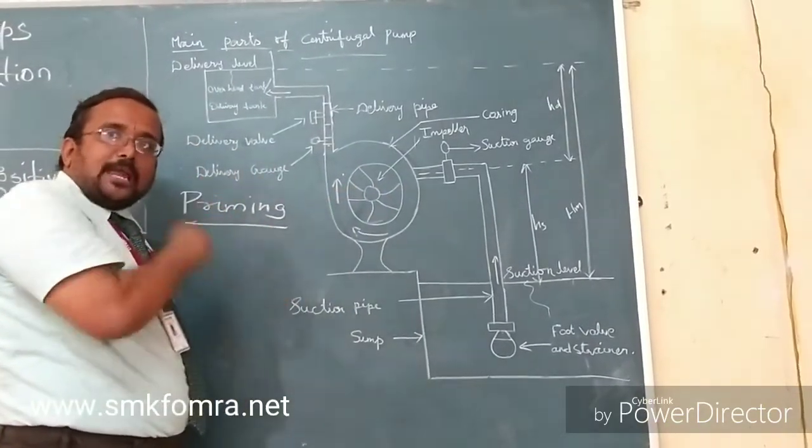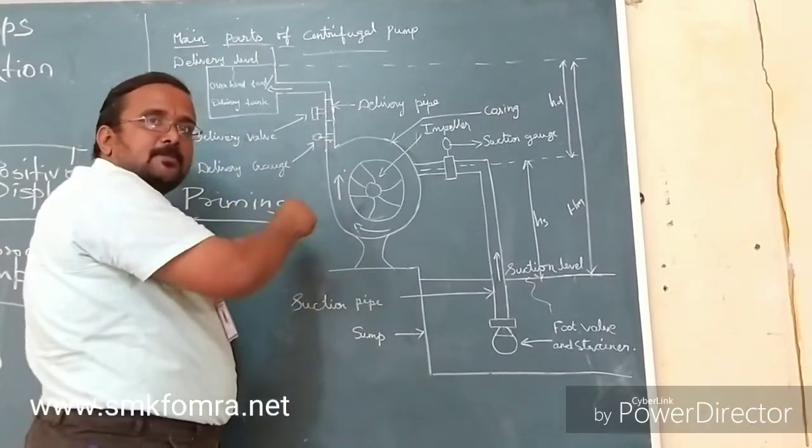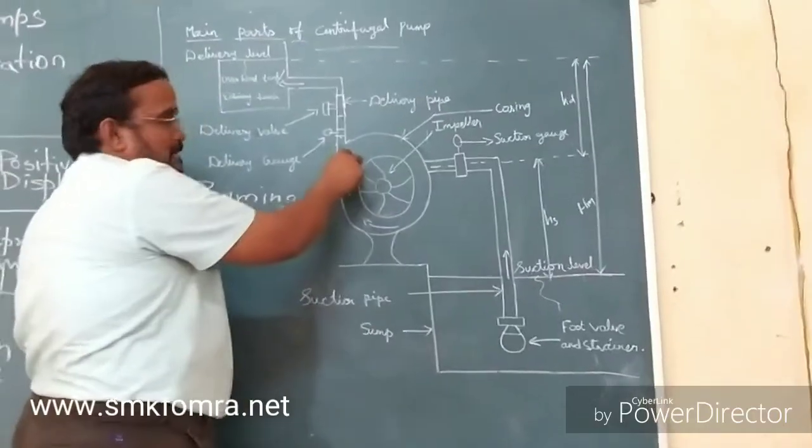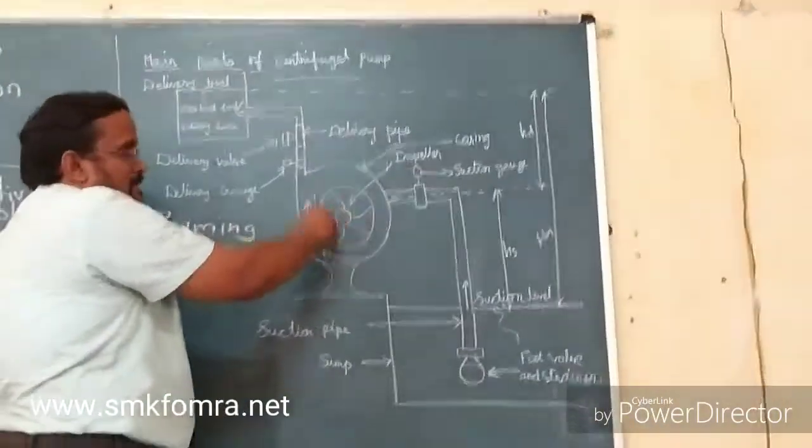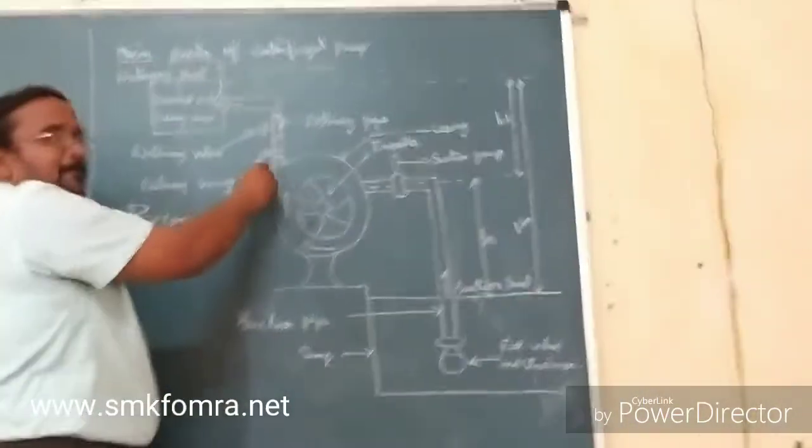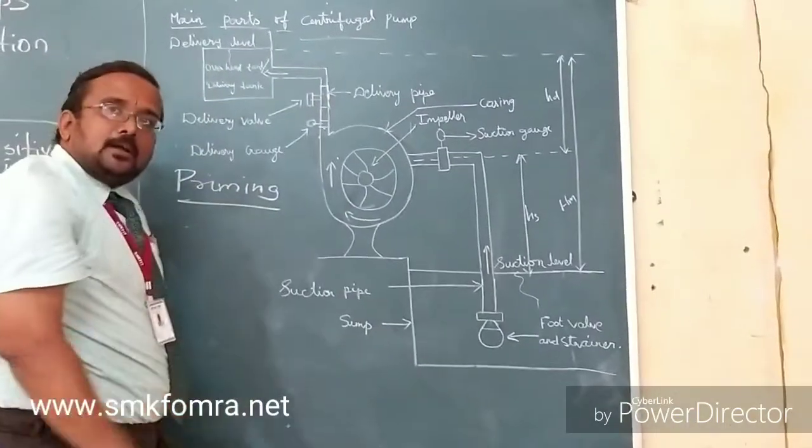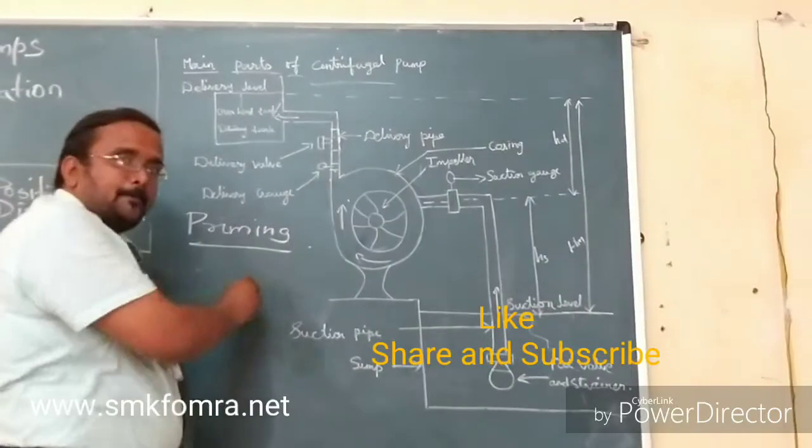When the impeller rotates, it imparts centrifugal force to the fluid. The fluid is displaced and it acquires velocity. Since centrifugal force is applied, it imparts velocity to the fluid, and it goes to the delivery pipe and is delivered into the tank. This is the working of the centrifugal pump.